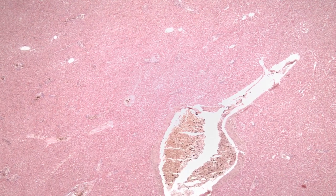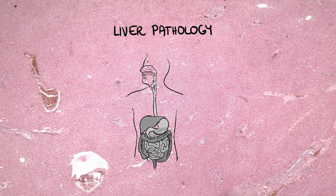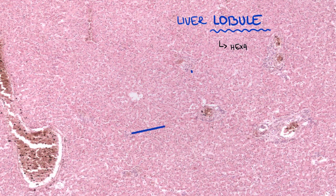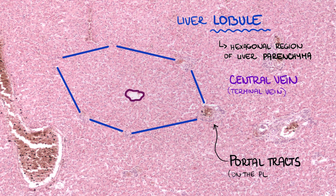Basic knowledge of liver histology is essential for understanding pathological processes in liver parenchyma and their distribution. The most frequently used terminology in liver pathology is based on the liver lobule. The lobule is a hexagonal region of liver parenchyma with a central vein, or synonymously terminal vein, in the center, and portal tracts on the periphery where three liver lobules touch.